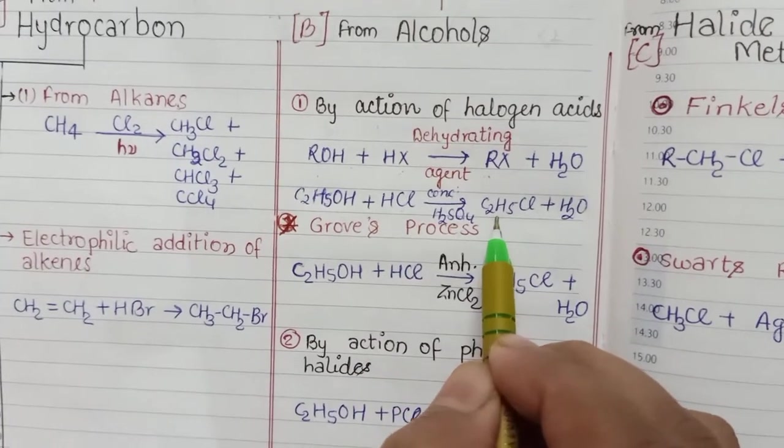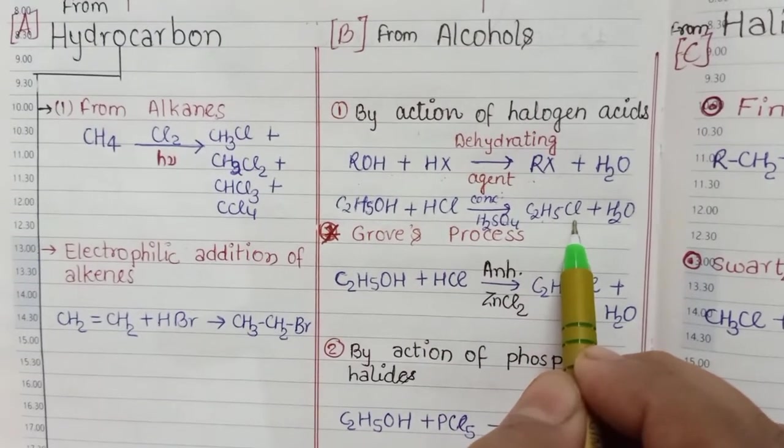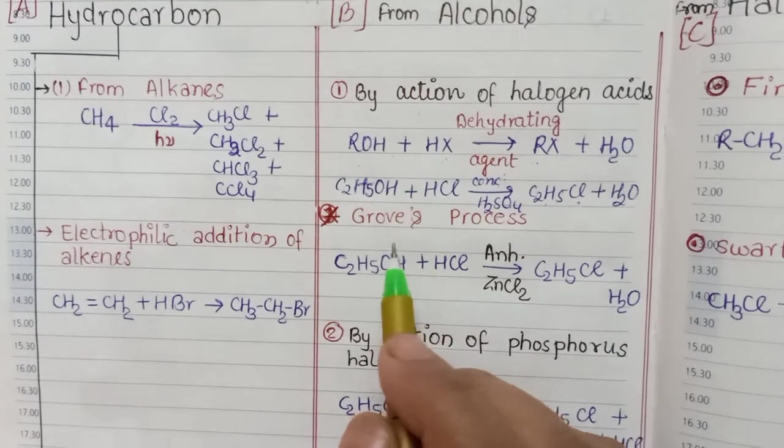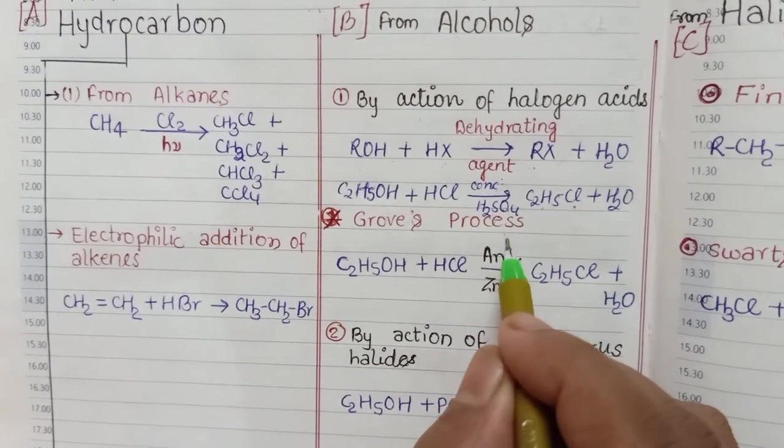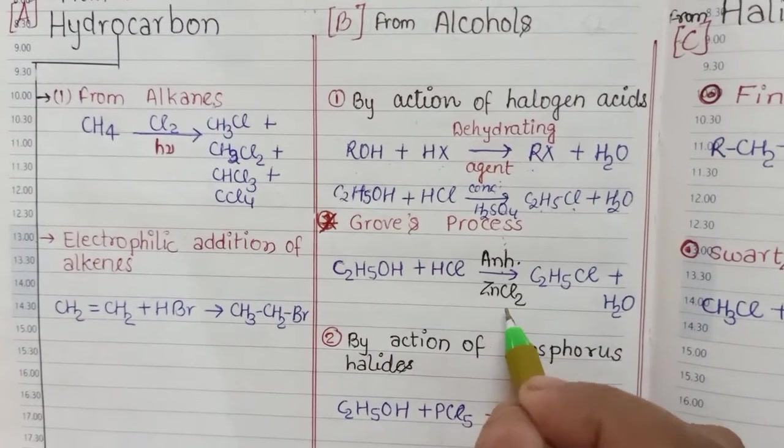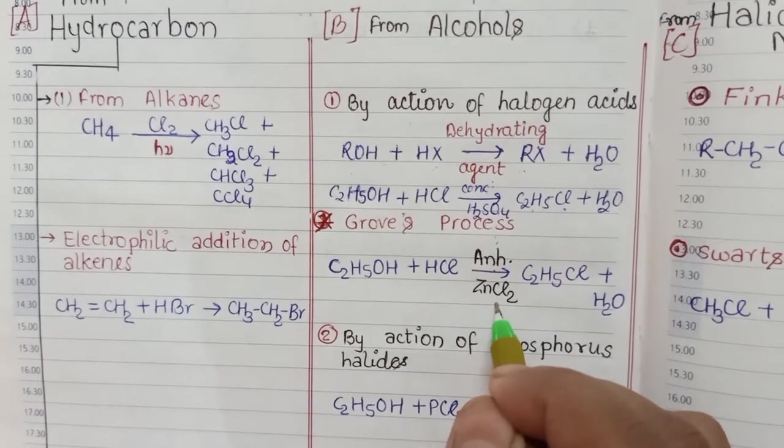Now, what is Groove's process? When anhydrous zinc chloride acts as a dehydrating agent in place of concentrated H2SO4, this process is called Groove's process.